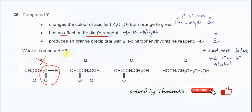Let's check the last statement. It produces an orange precipitate with 2,4-dinitrophenylhydrazine. This shows there is a presence of carbonyl. Carbonyl could be aldehyde or ketone. Since there is no aldehyde, this test is showing there is a presence of ketone.